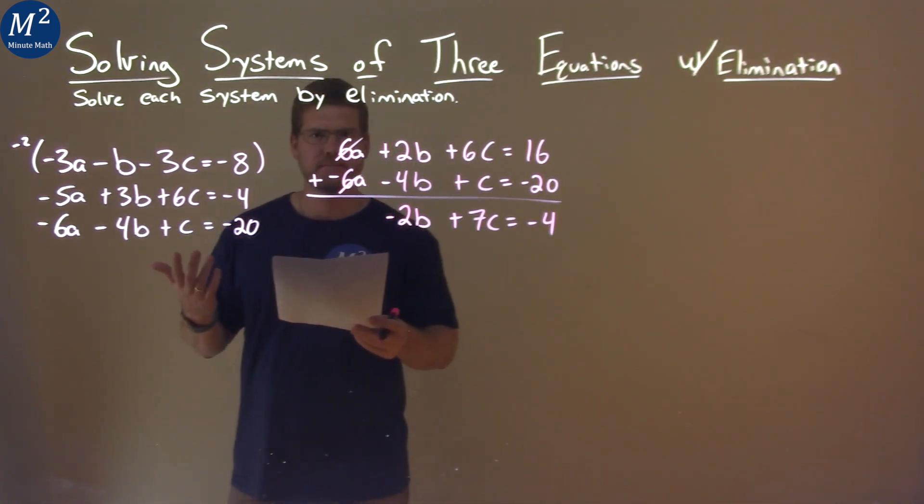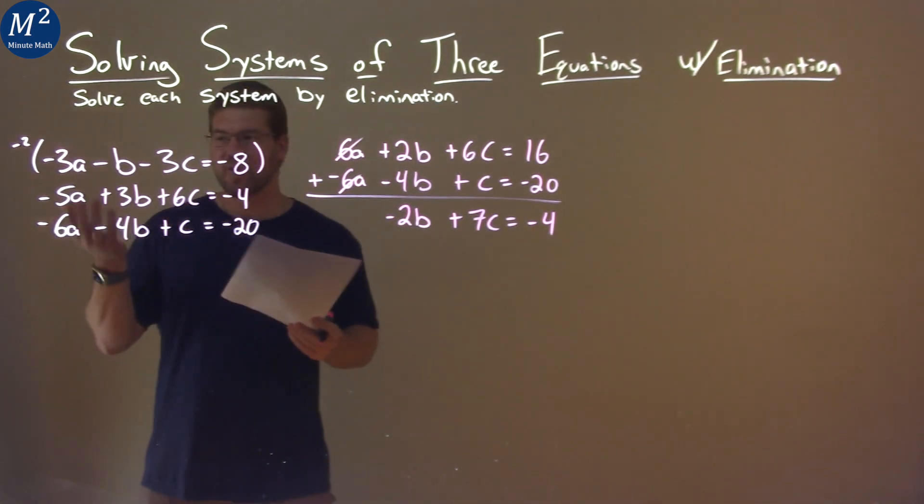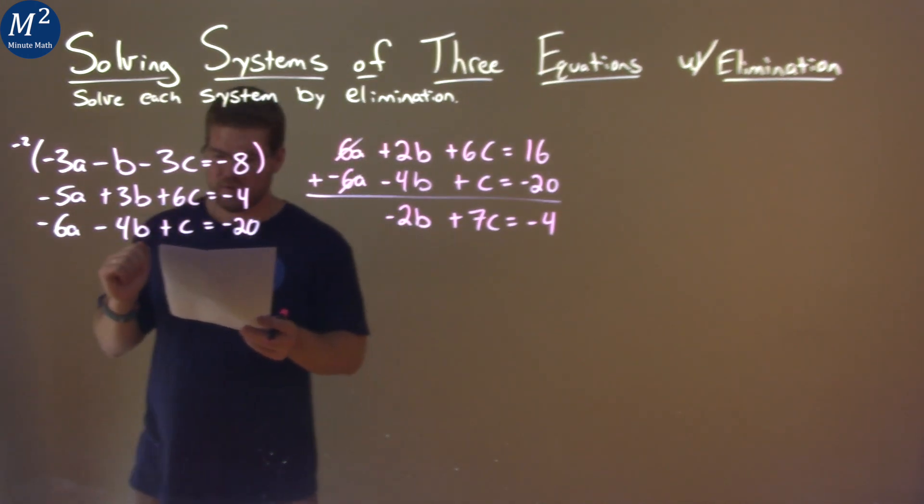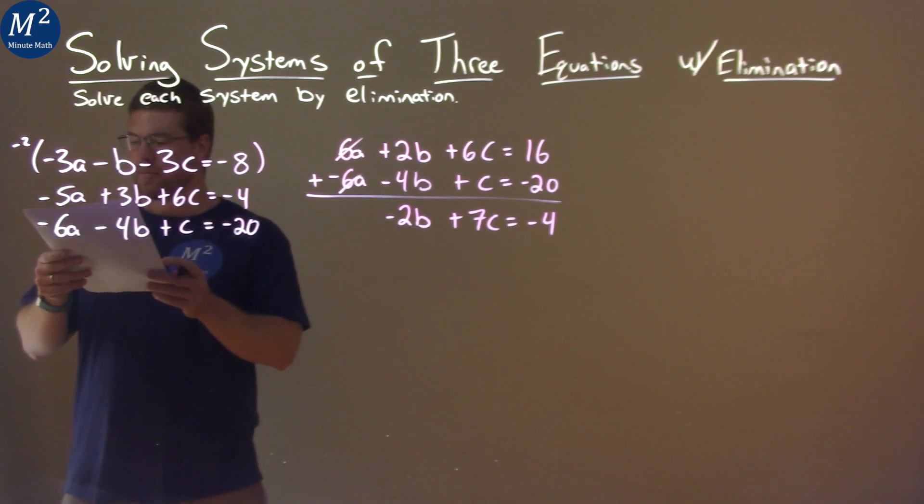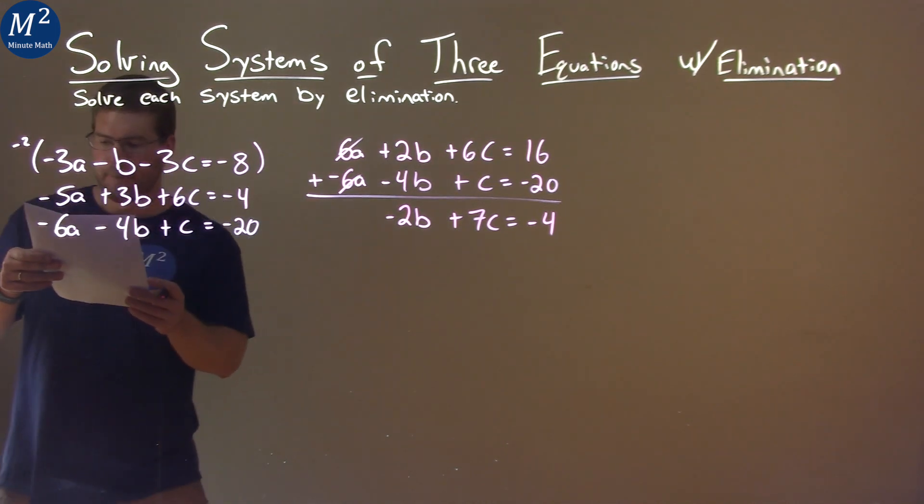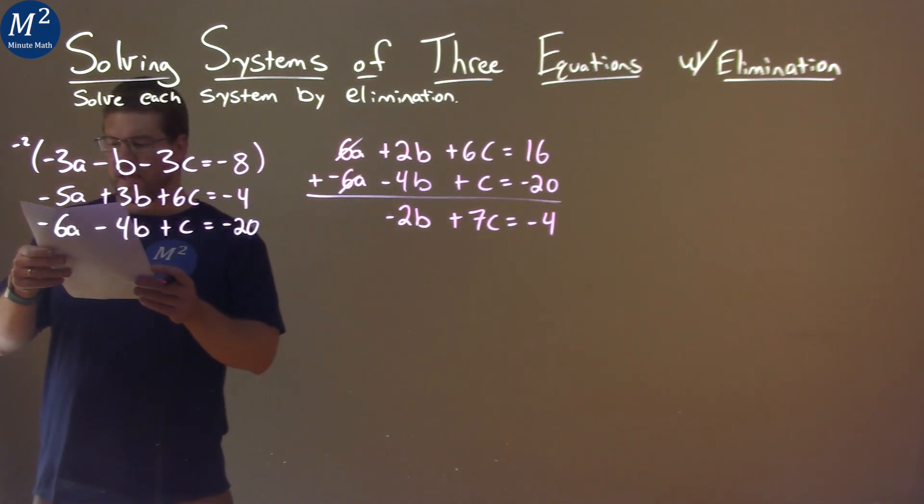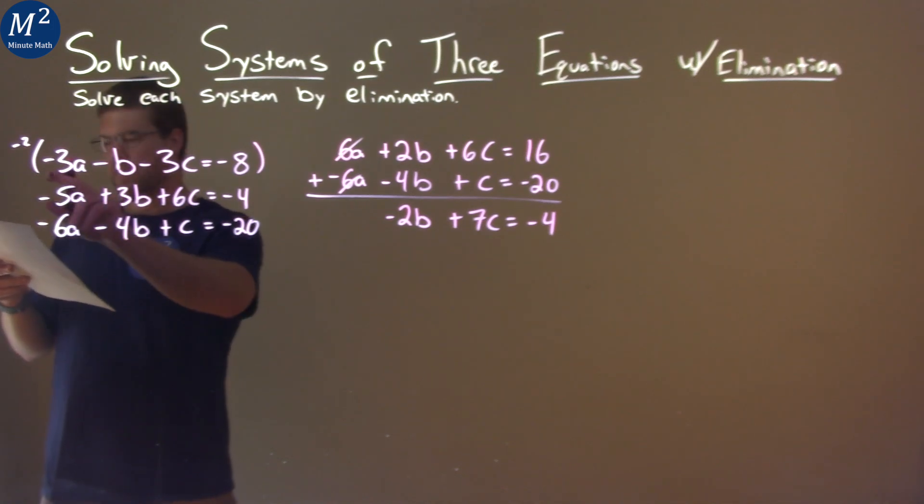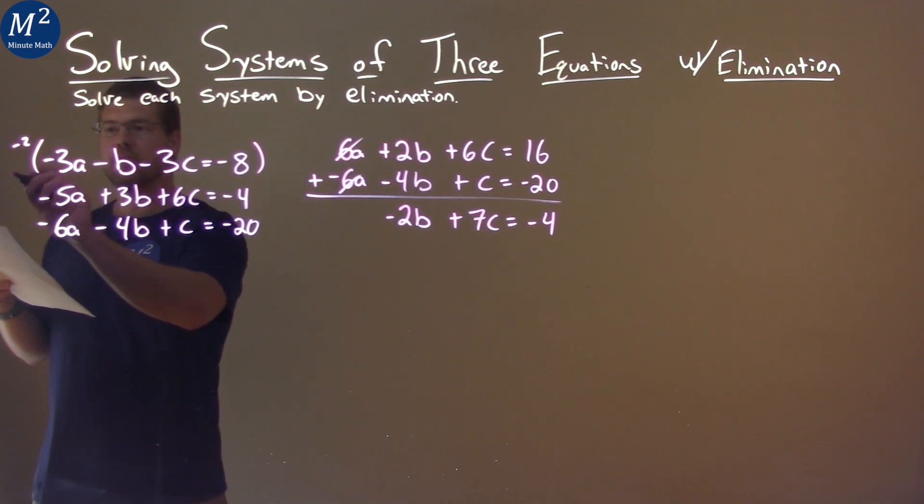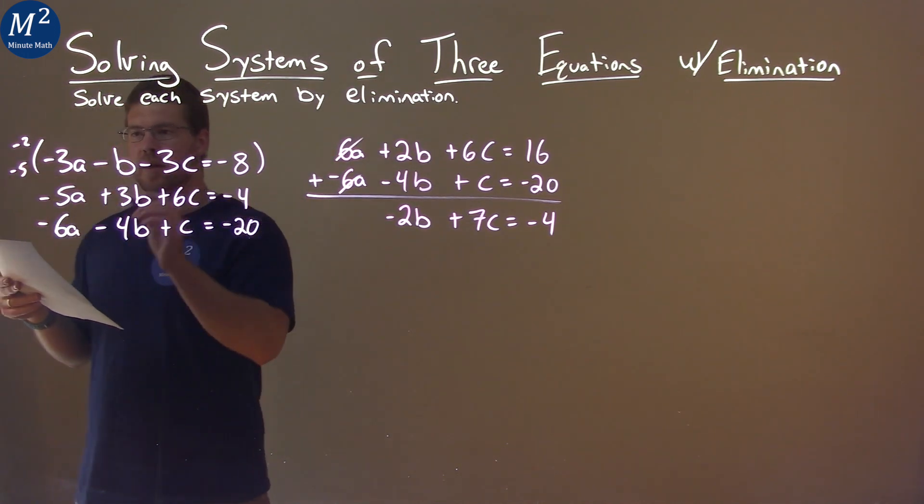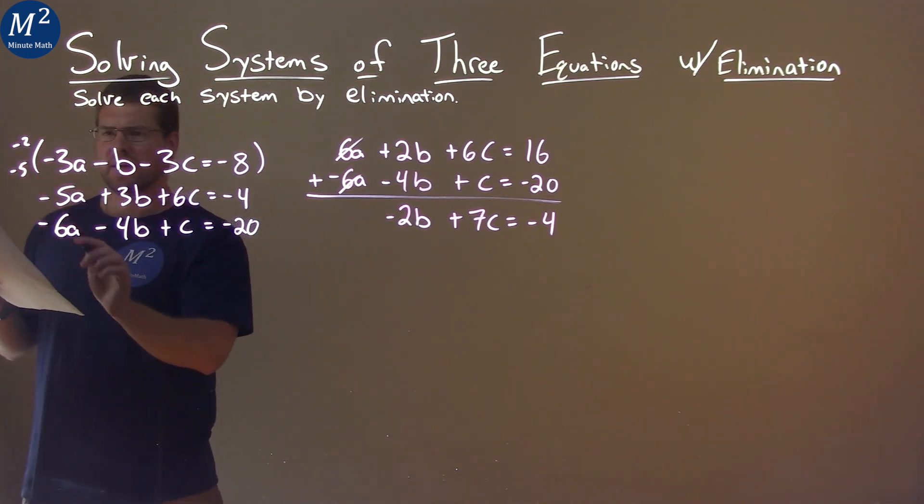Alright, we've got to find another equation. Let's try to eliminate an a again, using two different equations. If we take our first equation and we actually multiply that by negative 5, we have 15a. Negative 5 times negative b is positive 5b.